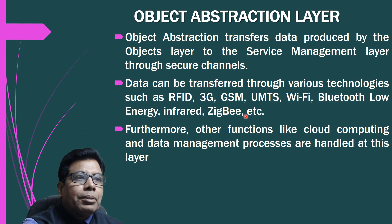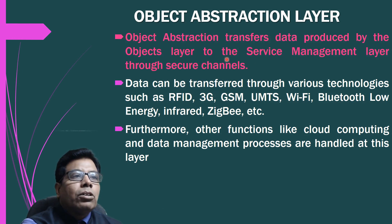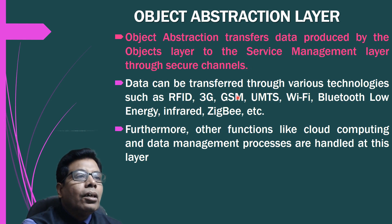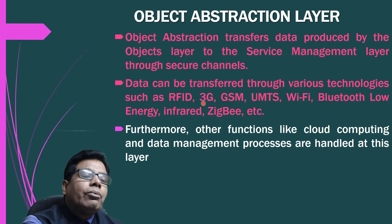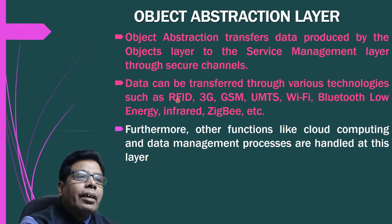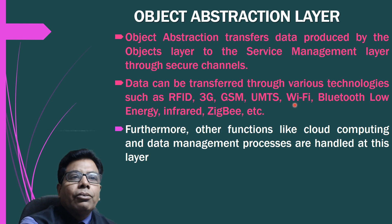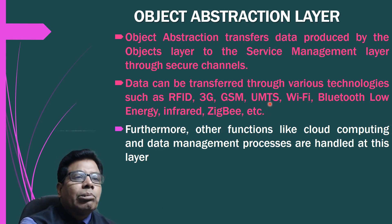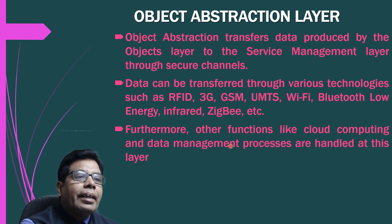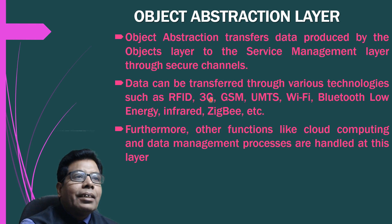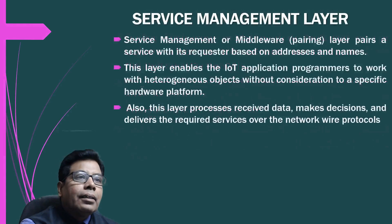The object abstraction layer transfers data produced by the object layer to the service management layer through secure channels — basically serving as the communication medium. Data can be transferred through various technologies such as RFID (radio frequency identification), 3G, GSM, UMTS, Wi-Fi, Bluetooth, Bluetooth low energy, infrared, and Zigbee. Furthermore, other functions like cloud computing and data management processes are also handled at this layer.